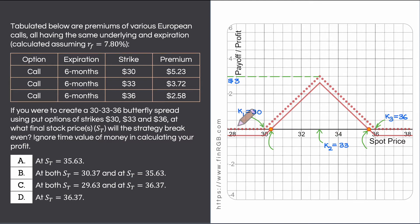To the left of 30 my payoff is 0. Between 30 and 33 my payoff rises linearly to the maximum possible payoff which is $3, the difference between the intermediate strike and the low strike.